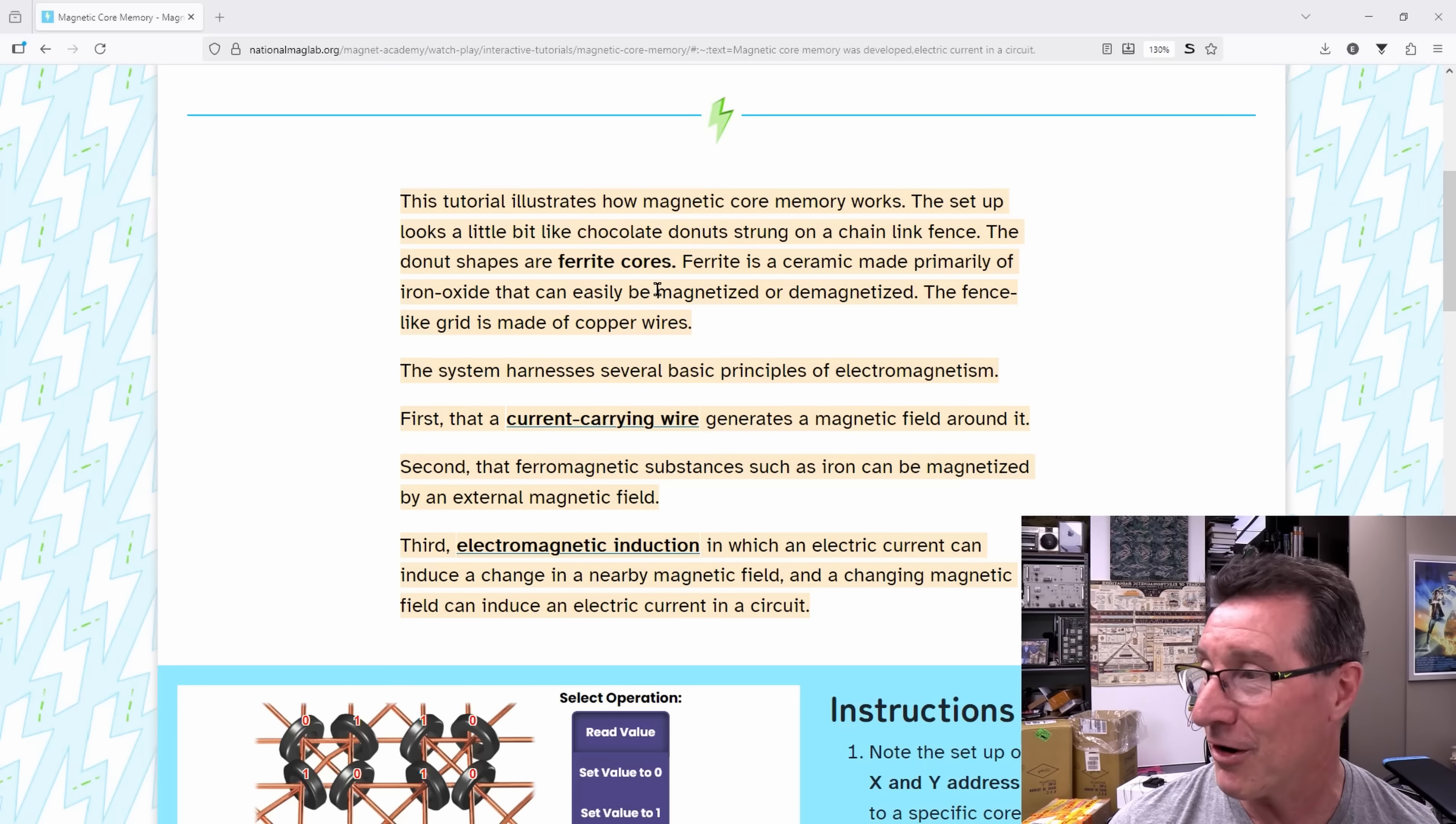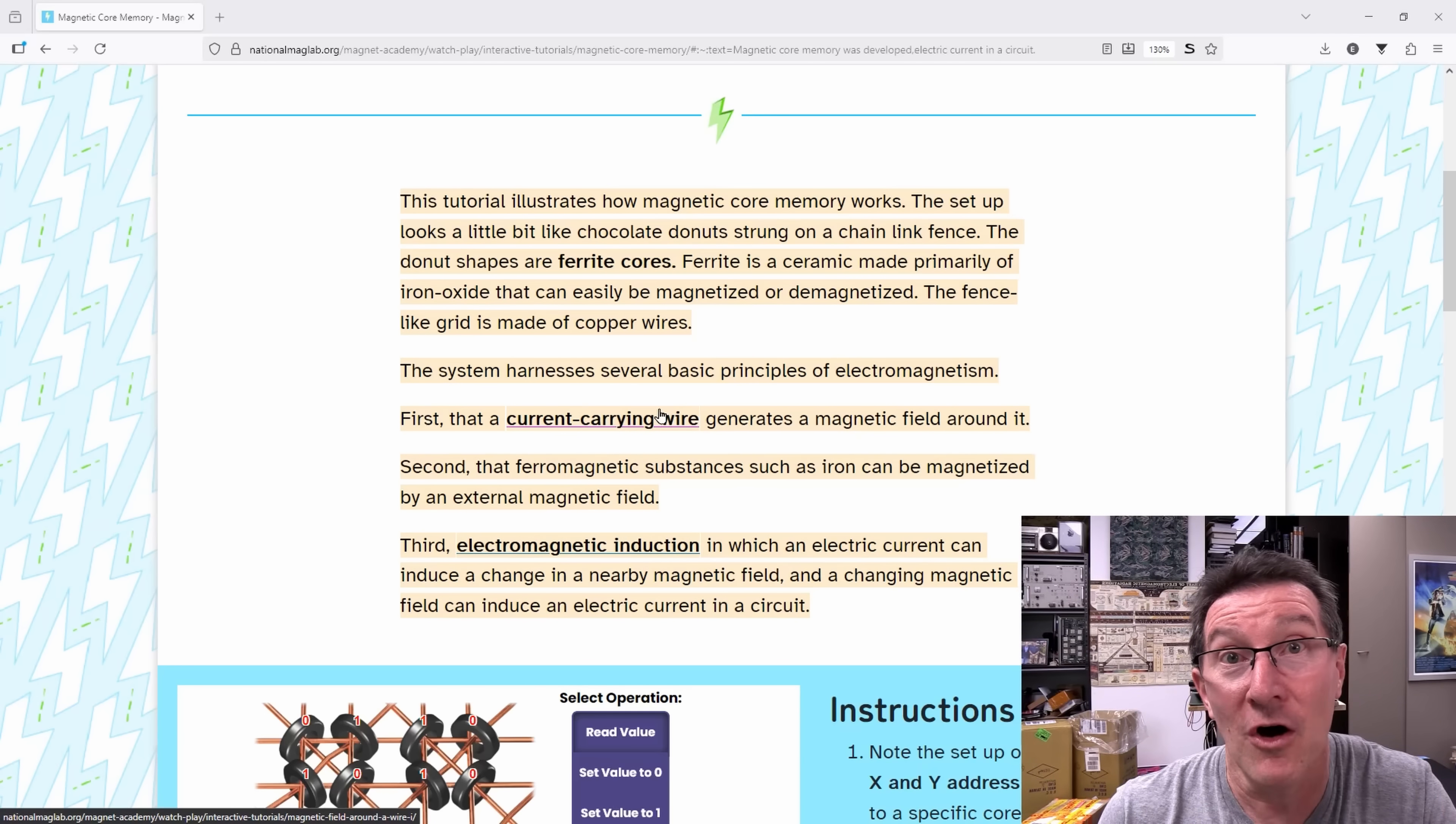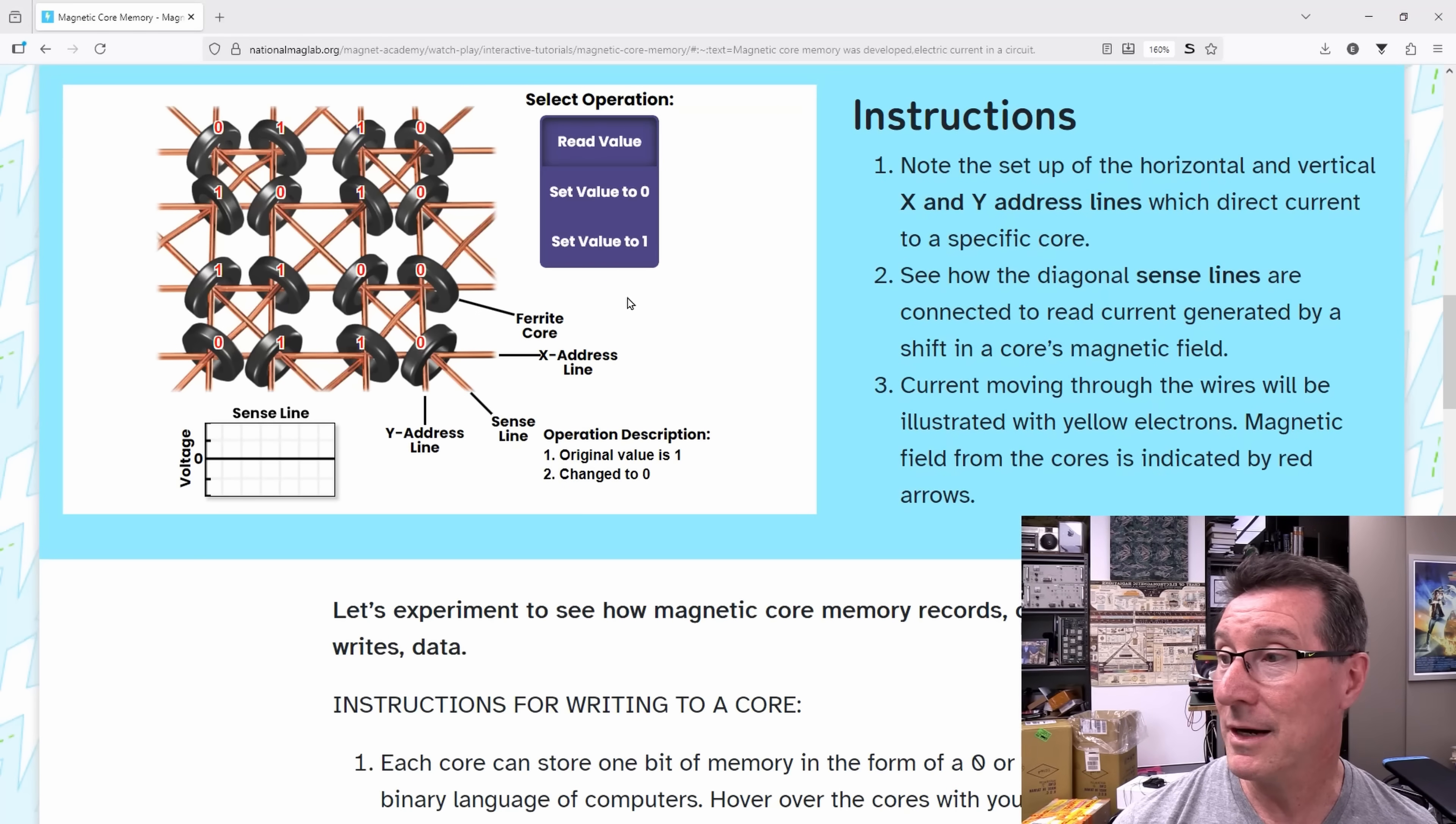Ferrite is a ceramic made primarily of iron oxide that can easily be magnetized or demagnetized. I'm not sure if they ever used any secret sauce in them. I don't think they had to, really. It was just basic iron oxide type stuff. Of course, you can just permanently magnetize iron, and then you can demagnetize it as well, just like you can magnetize your screwdriver and demagnetize it. So what we're going to do is set a value of 1 in this bottom left corner down here.